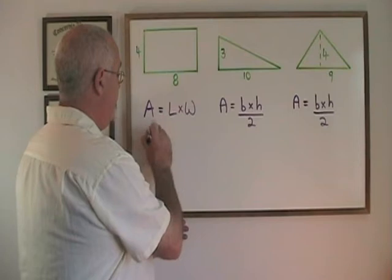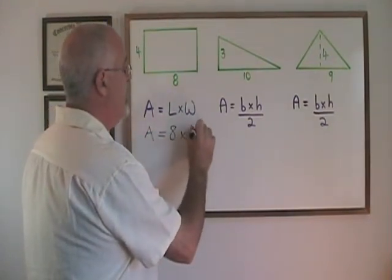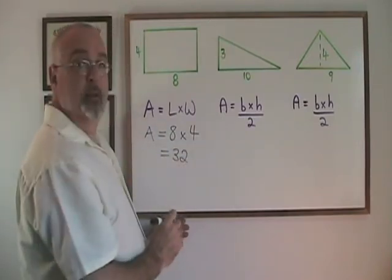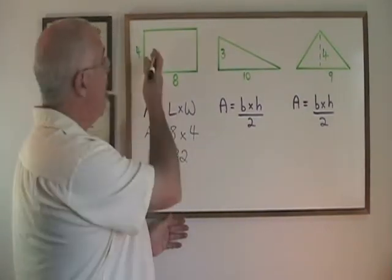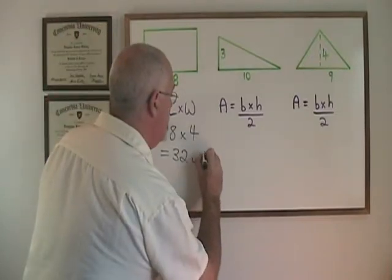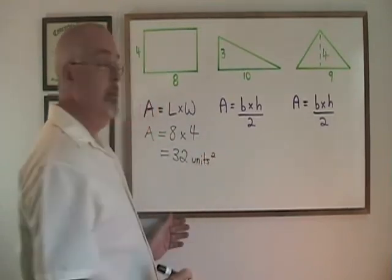I'll fill it in. Area here equals length 8 times width 4 which is 32 and my unit has to be squared. No unit was given in the question so I'll just use the word units as my unit and make sure that I point out the units are squared.